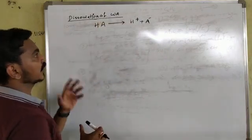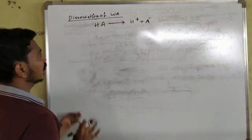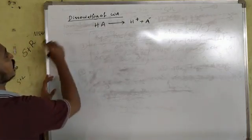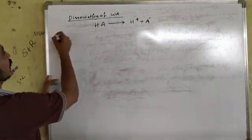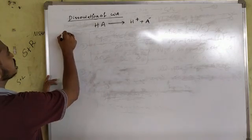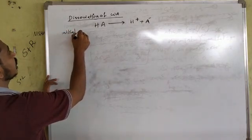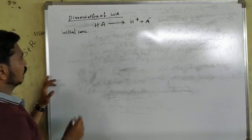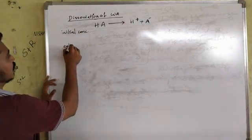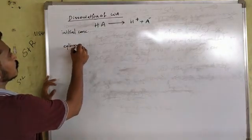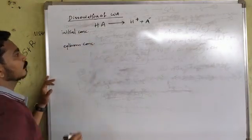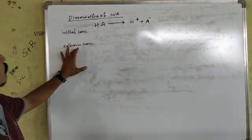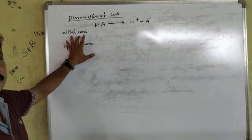This is the concentration of H-A. We will set up the concentration table. We have the initial concentration, then the equilibrium concentration. Initial concentration and equilibrium concentration are the two rows we need to fill in.